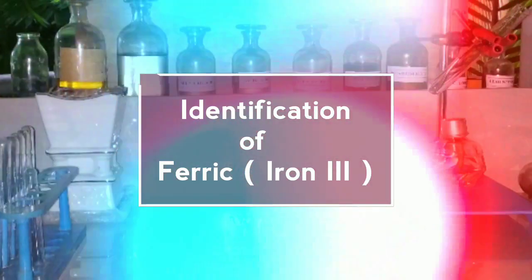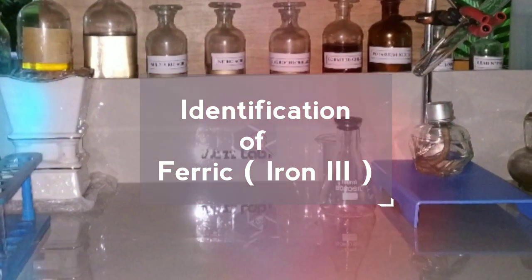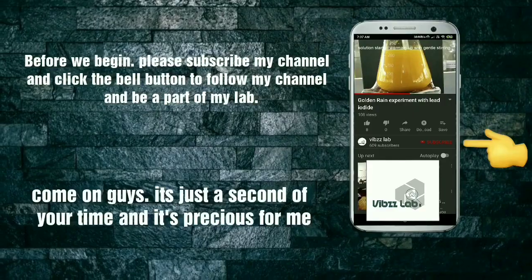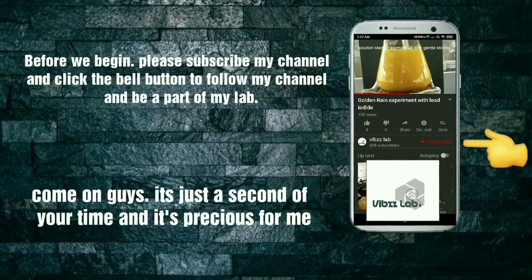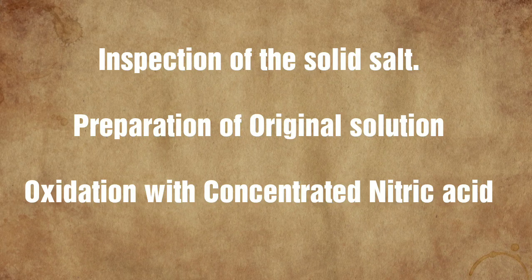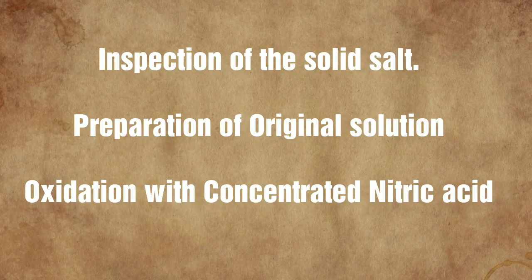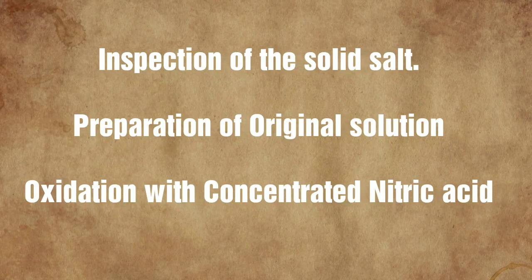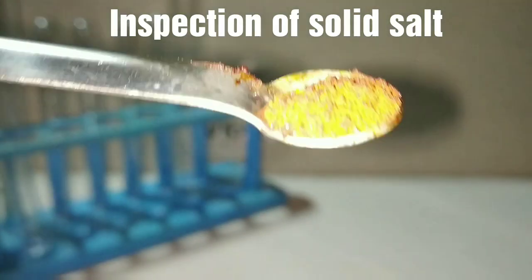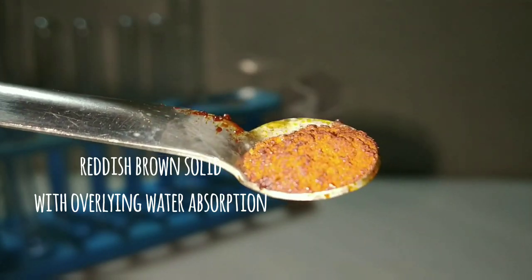Hello friends, today we would be doing the identification of ferric ions. First of all we inspect the solid salt, then we will be preparing the original solution, and we will oxidize the original solution with concentrated nitric acid. On inspection of the solid salt, you can see that it is reddish brown in color.